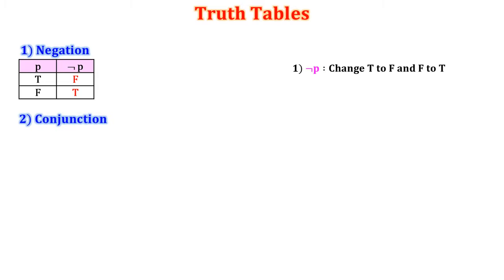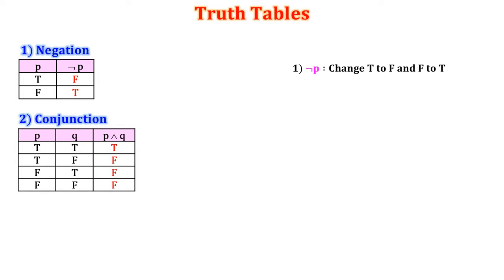2. Conjunction. There are two statements P and Q. If we have two statements then there are four possibilities: TT, TF, FT, FF. The conjunction is denoted as P AND Q. If both are true then the answer is true, otherwise false.